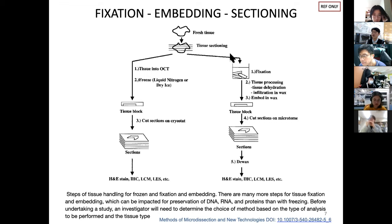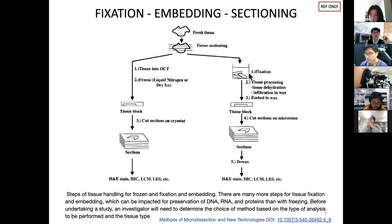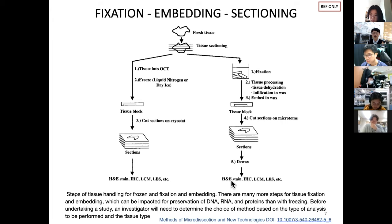For paraffin embedding, we have more time for fixation and tissue processing. We embed in wax — this is hot, so we lose some molecular components — but paraffin wax provides excellent stability for the tissue block so we can cut sections on a microtome. After sectioning, we dewax and can do H&E stain. This provides way better quality H&E stain and immunohistochemistry compared to the frozen ice approach.